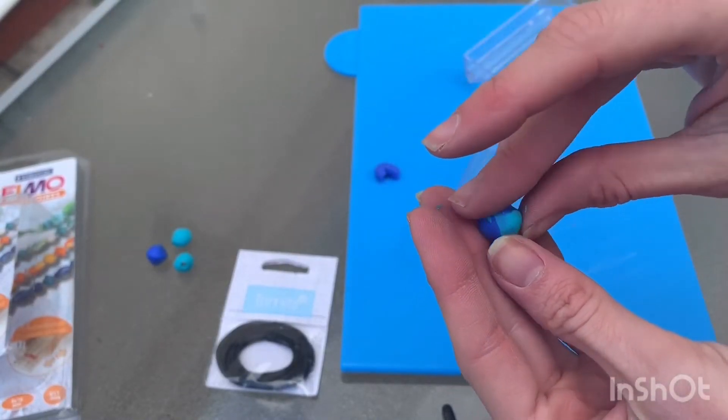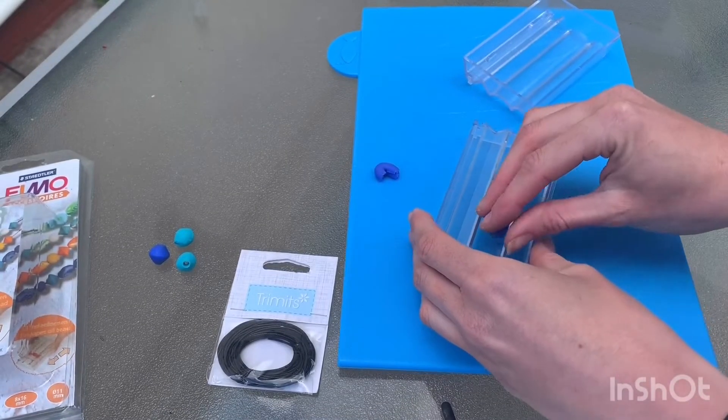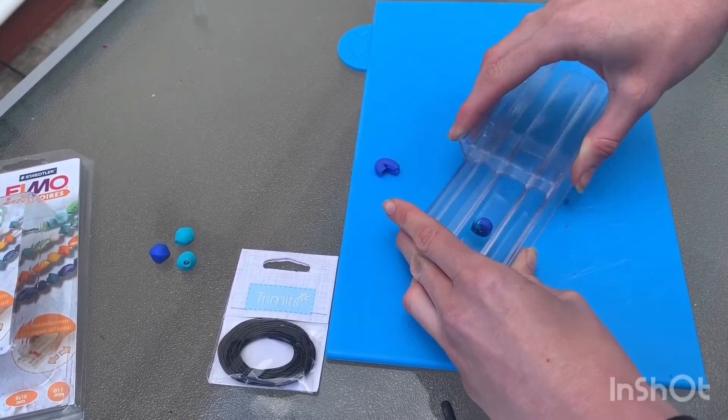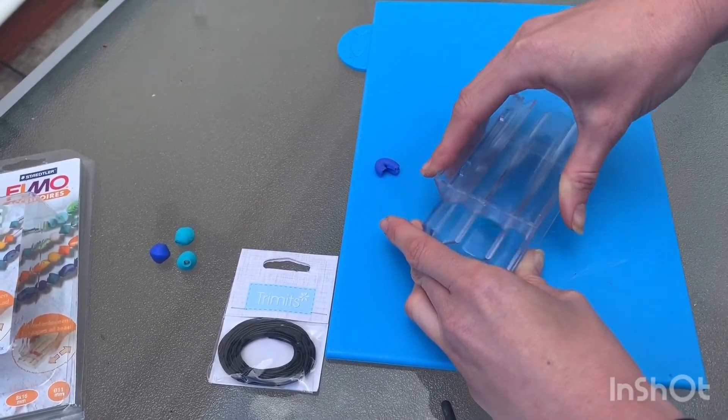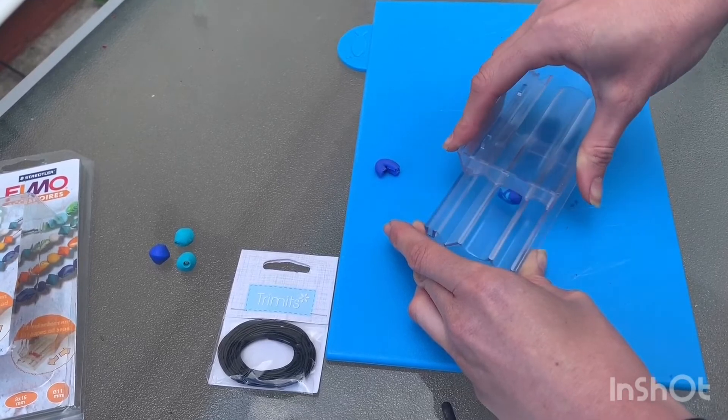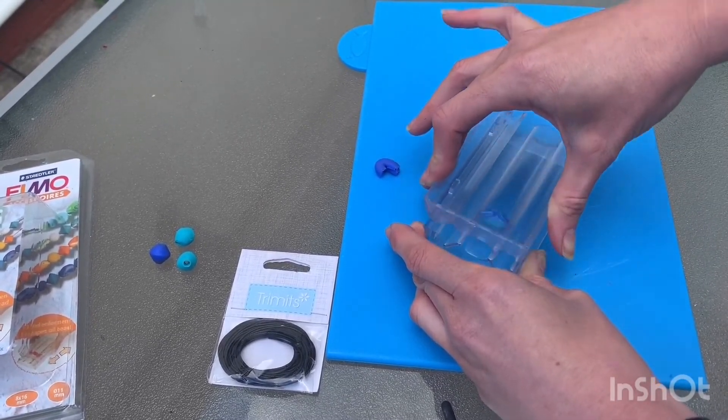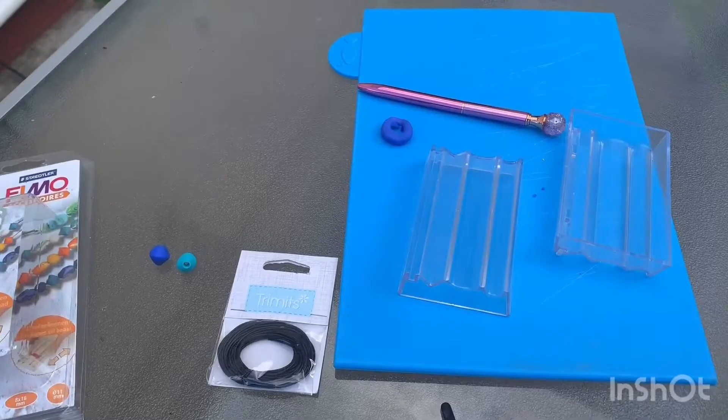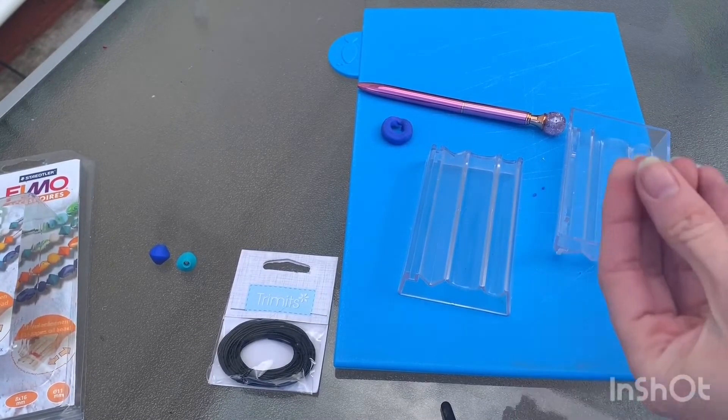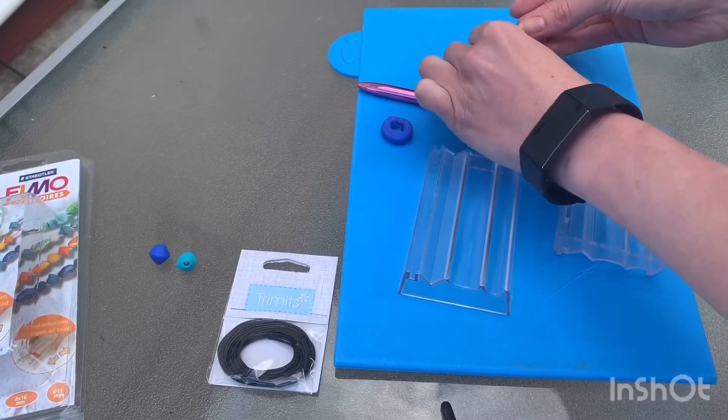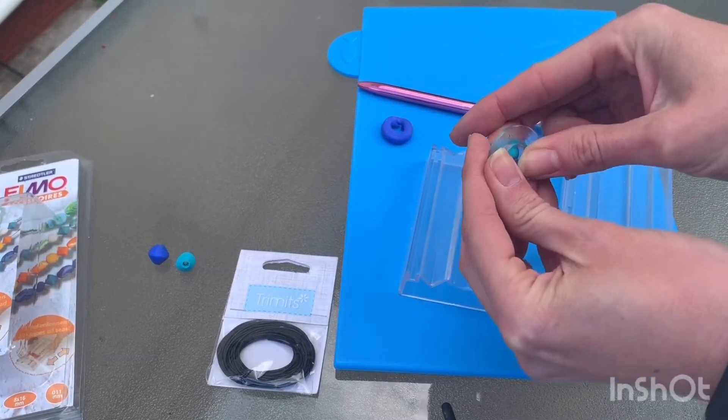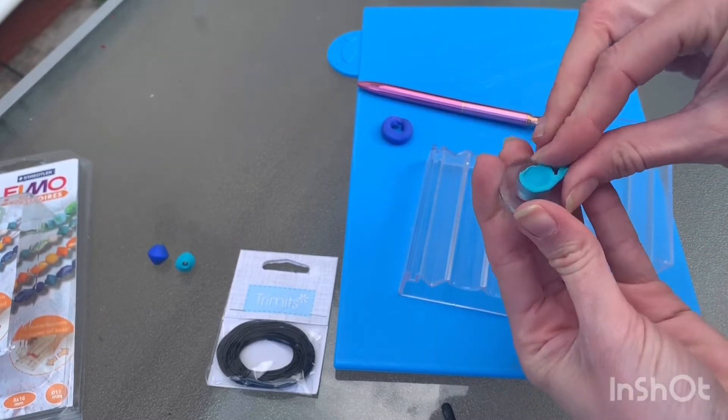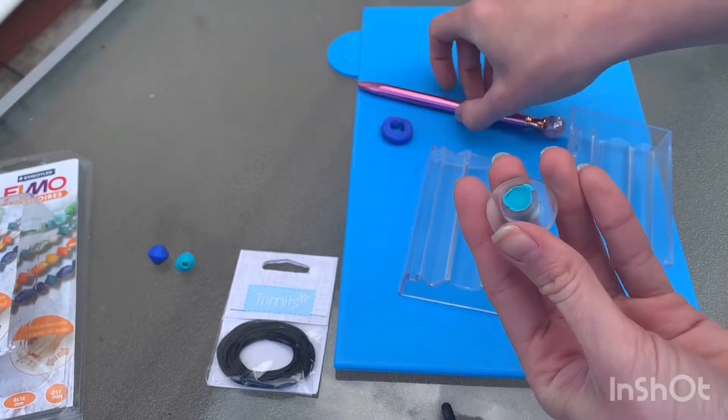You can also mix up your clay colours just to give different patterns on the beads. Take your coloured clay and this cutting tool. You just need to make sure that you've got the exact right amount for the bead, so you push that into there, take off any excess, and then push this out of the mold.